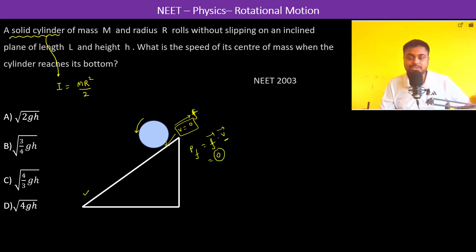Therefore, the entire potential energy which has been decreased, mgh, should be equal to half mv square which is the linear kinetic energy plus half i omega square which is the rotational kinetic energy.